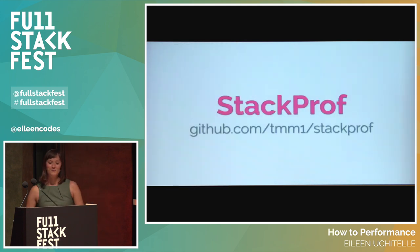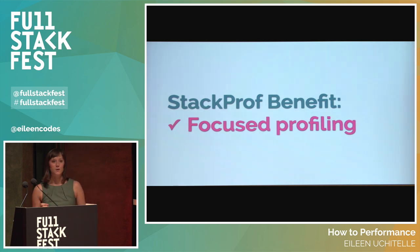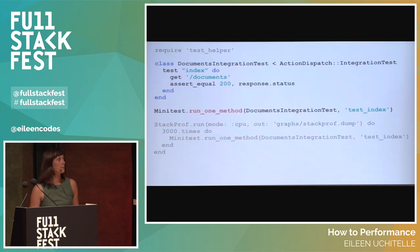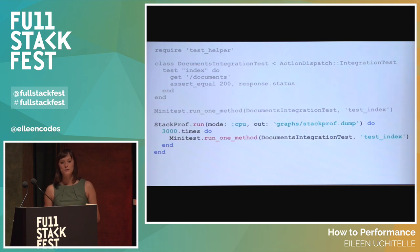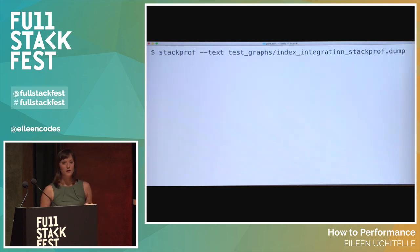The first tool that Aaron introduced me to was StackProf. StackProf was written by Amin Gupta and is a Ruby profiler like RubyProf, but it takes a sampling of the call stack so you can focus on the biggest problems and slowdowns in your code. Here's an example of the StackProf profiler code we used. We add the integration test code like we did in previous examples. Then we call StackProf and set a file for it to output to. Inside the block, we run the Minitest method 3,000 times. We need to run it so many times to get a real sample of our Ruby code. Since it's outputting to a file, we need to open the specified file after the script runs.